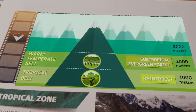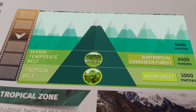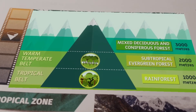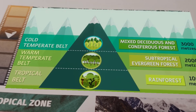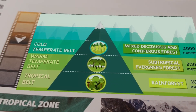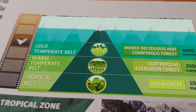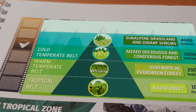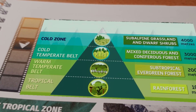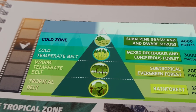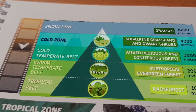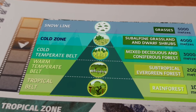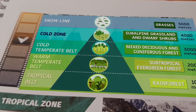Above this, the cold-temperate belt extends up to 3,000 meters, where deciduous and mixed coniferous forests dominate. Between 3,000 and 4,000 meters, the cold zone is characterized by subalpine grasslands and dwarf shrubs. The snow line is at an altitude of 5,000 meters, where nothing but grasses survive — this is called the limit of plant life.